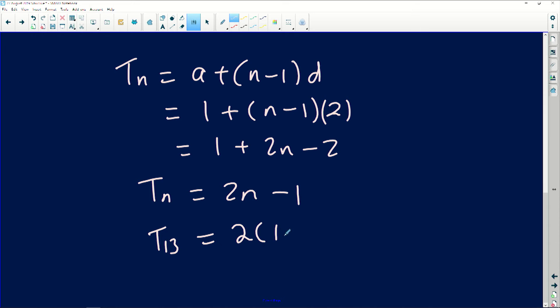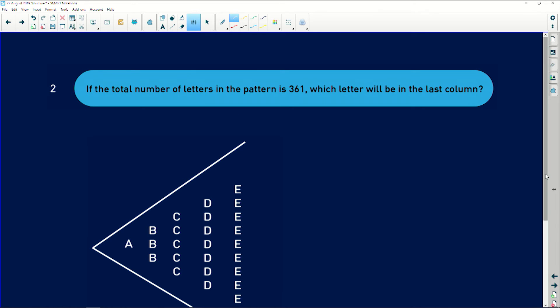So which means we are looking for T13, which is 2 into 13 minus 1, which will give you an answer of 26 minus 1. Therefore there's actually going to be 25 M's in that particular row.